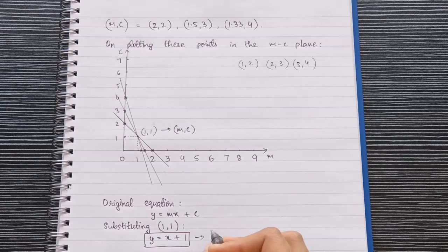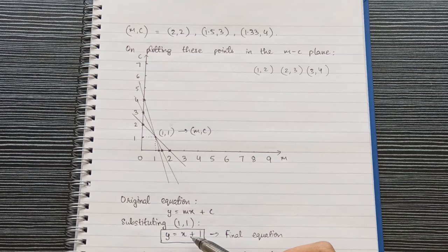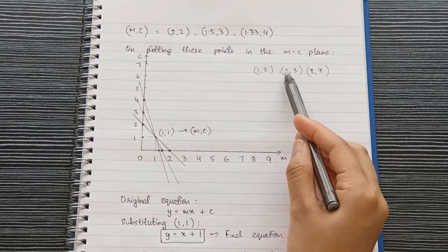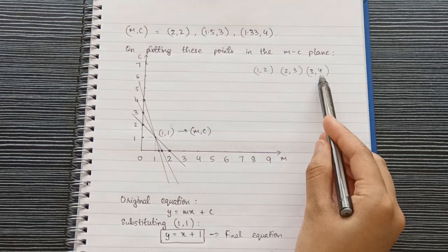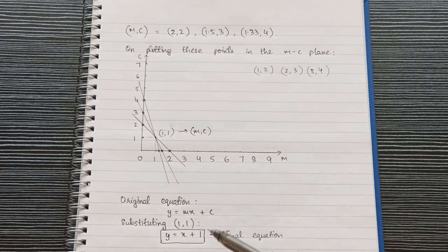As a final check, we substitute each point into y equal to x plus 1. Taking x equal to 1 gives y equal to 2, confirming the first point lies on this line. Taking x equal to 2 gives y equal to 3, and x equal to 3 gives y equal to 4, confirming all three points lie on this line. That's it for this lecture — see you in the next one.